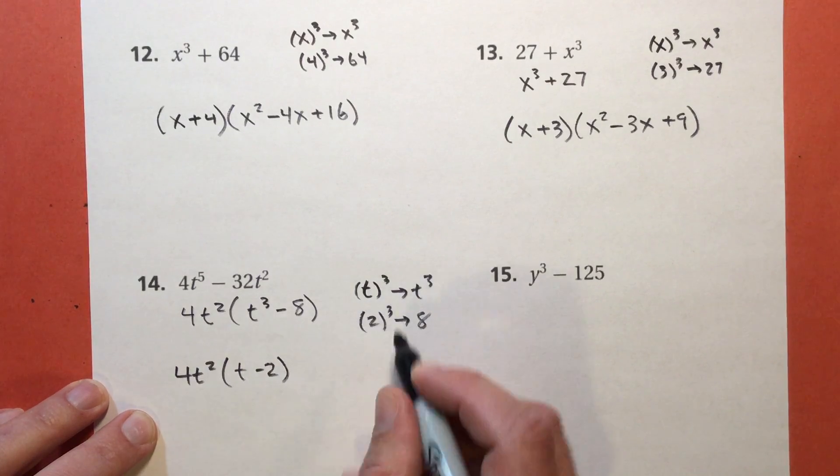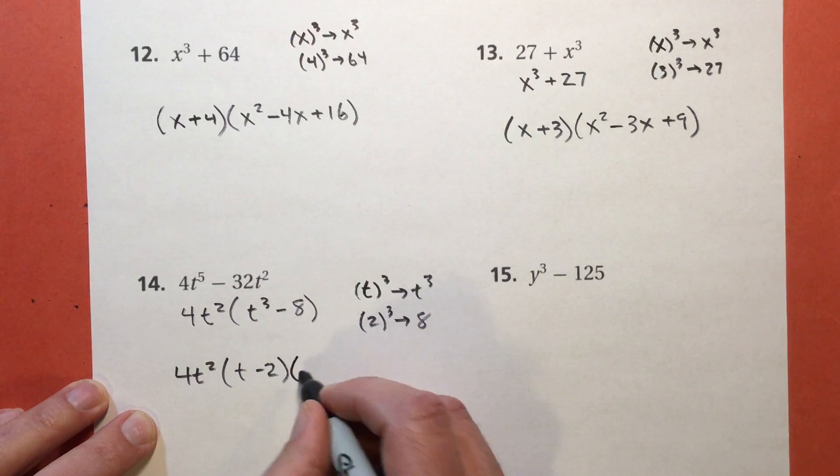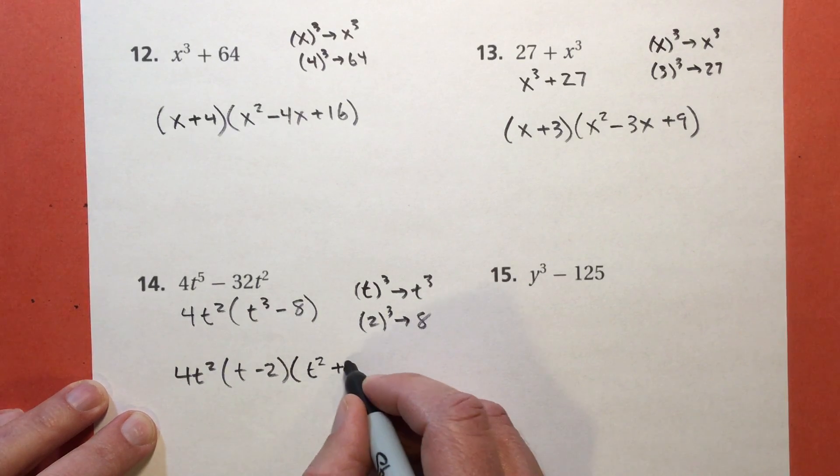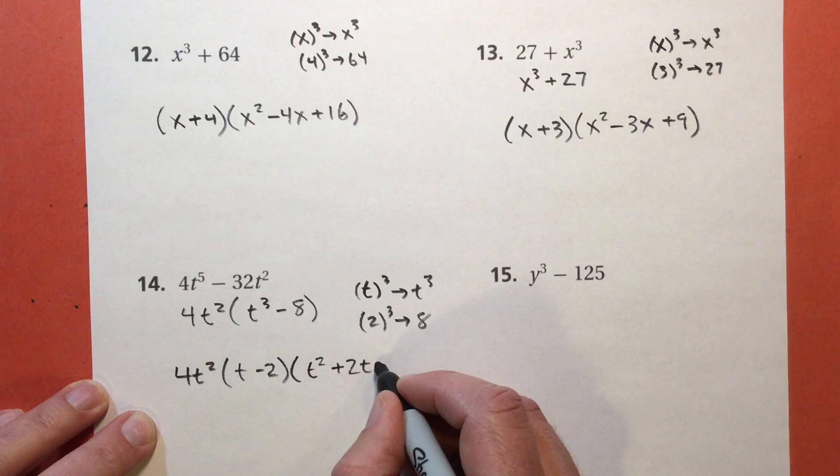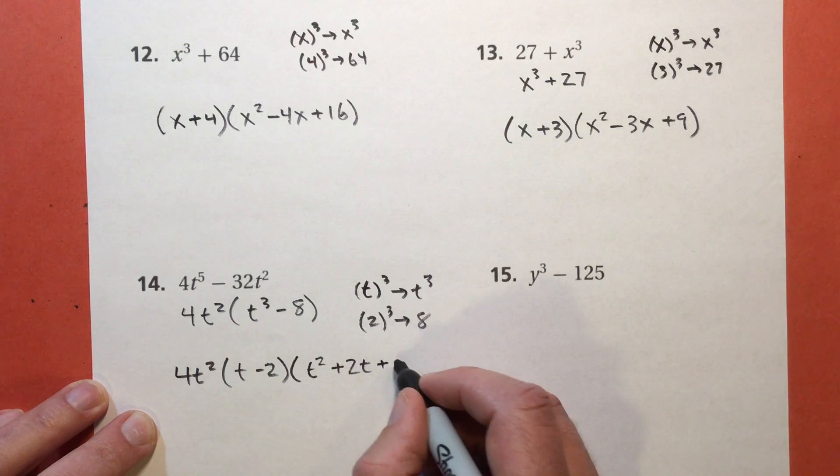t subtract 2. That's that t. Subtract that 2. t squared. Plus 2 times t. Plus 2 squared, which is 4.